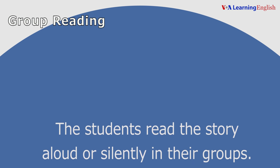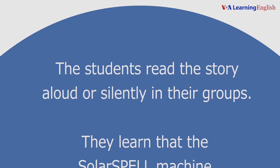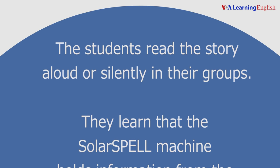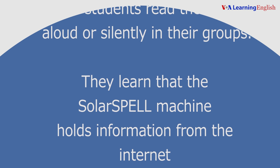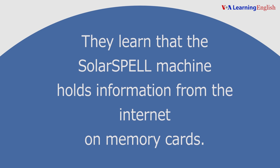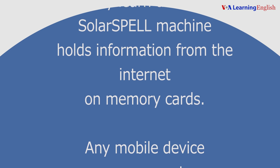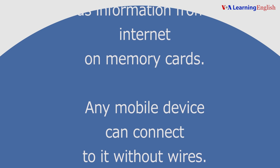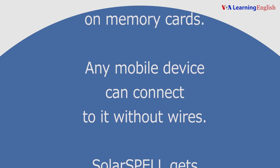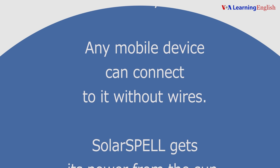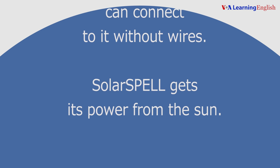Group reading. The students read the story aloud or silently in their groups. They learn that the SolarSPELL machine holds information from the internet on memory cards. Any mobile device can connect to it without wires. SolarSPELL gets its power from the sun.